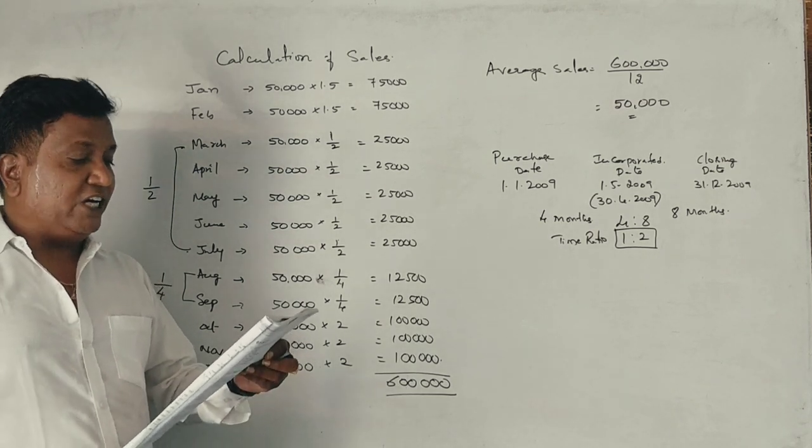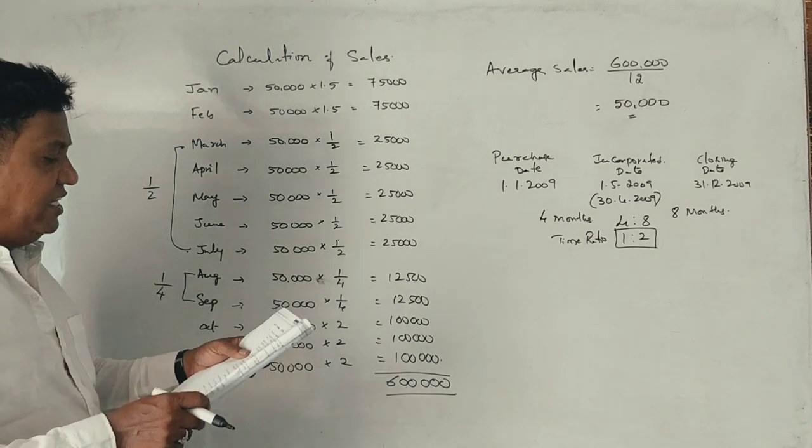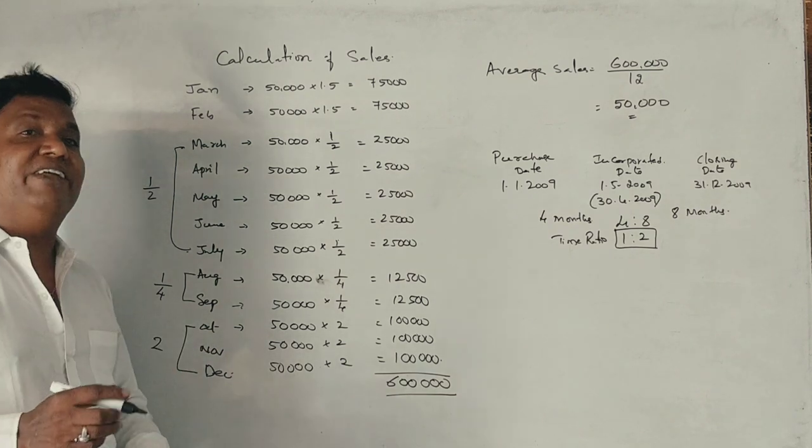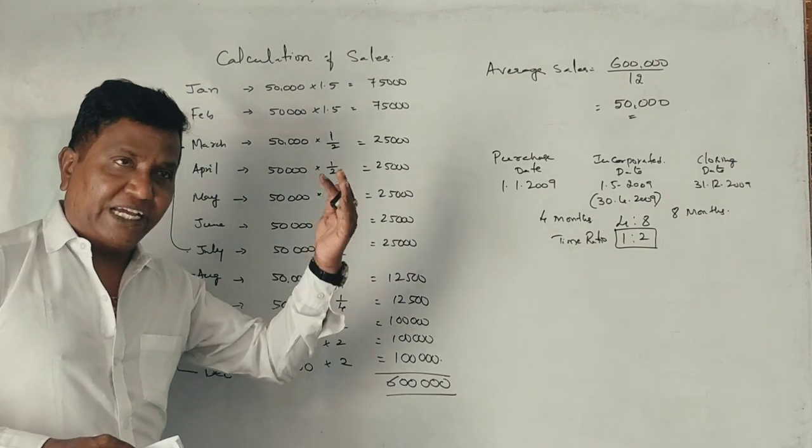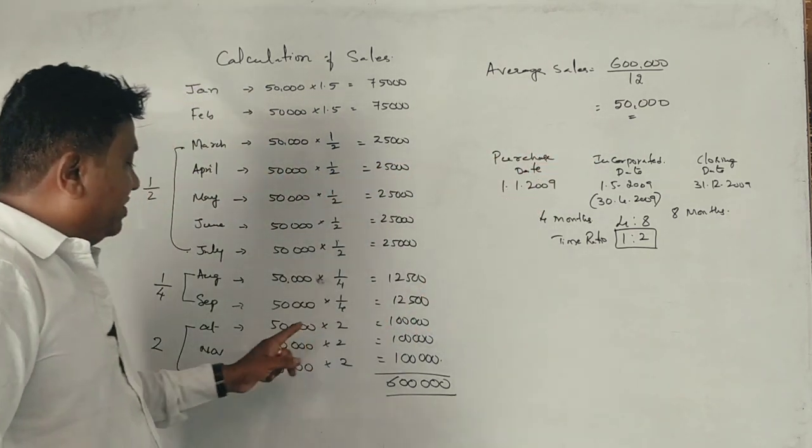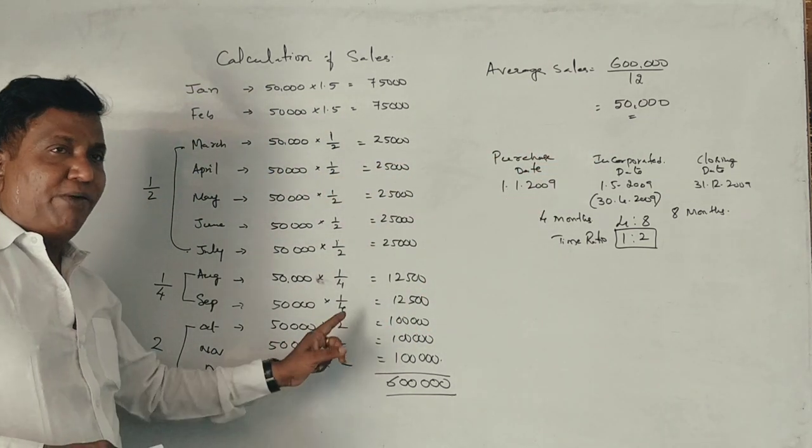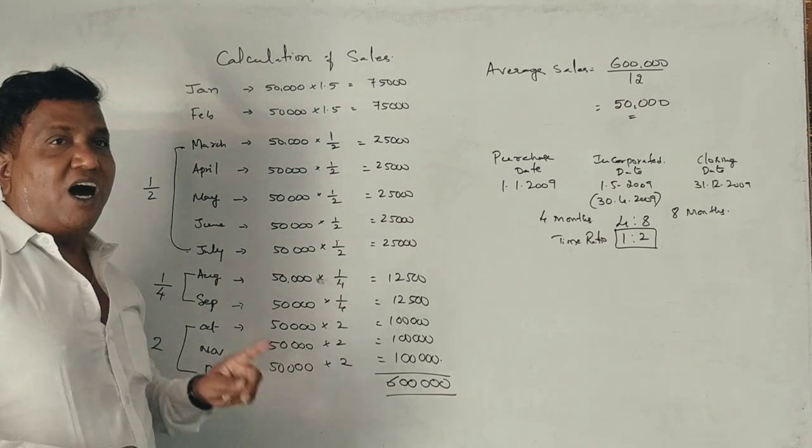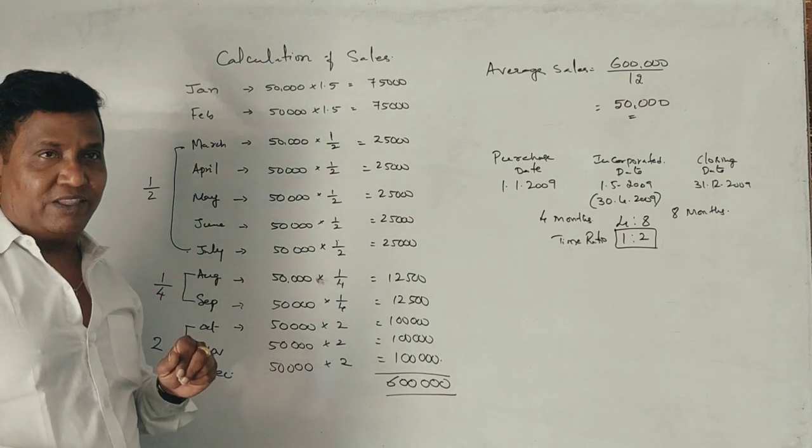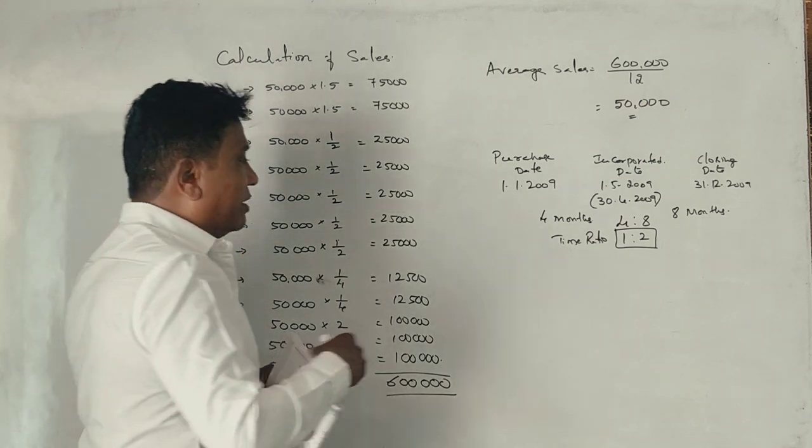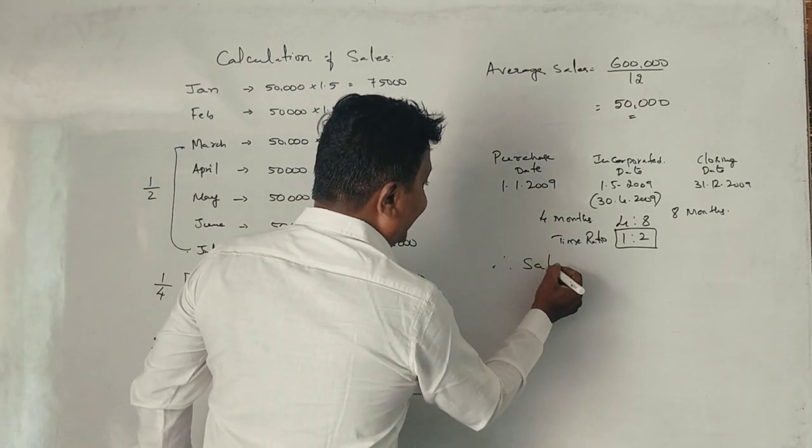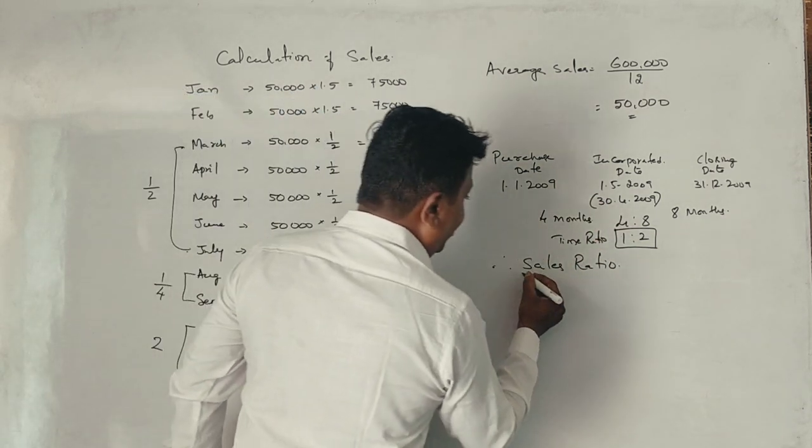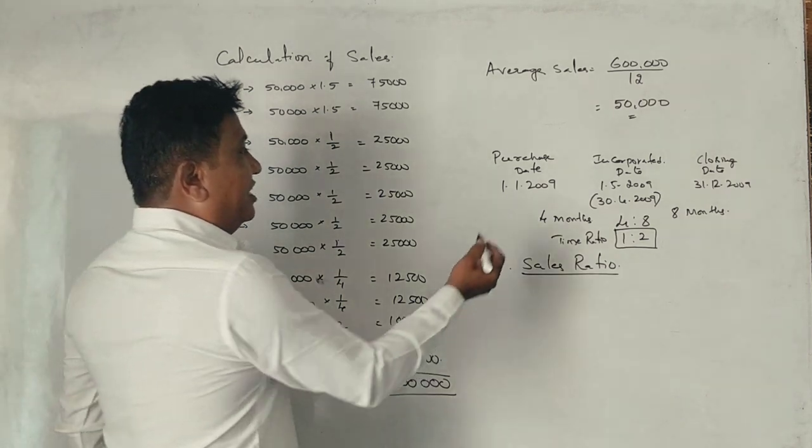October to December, sales are double the average monthly sales. Double of the average monthly sales. You can add all these numbers with the average monthly sales multipliers.